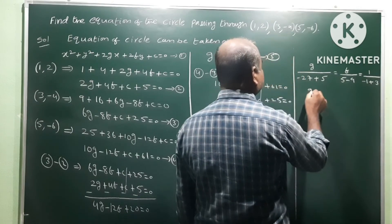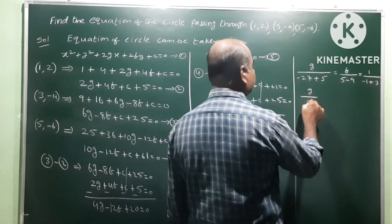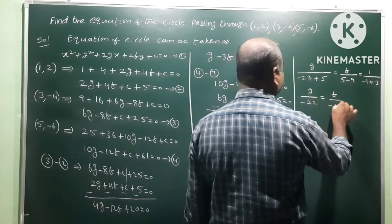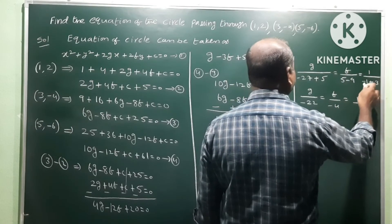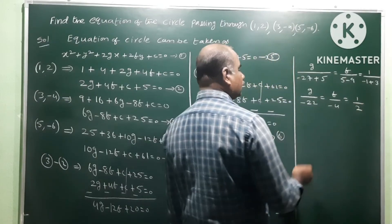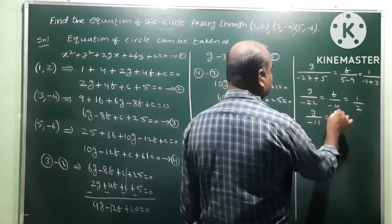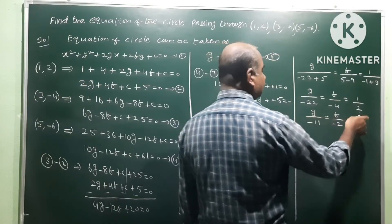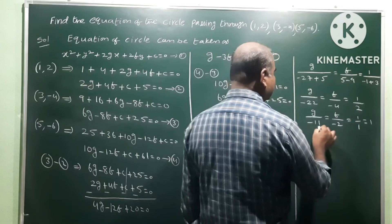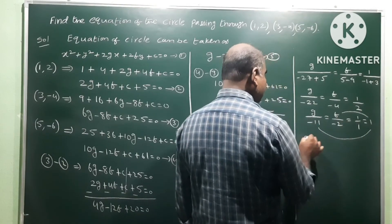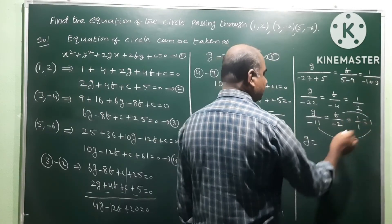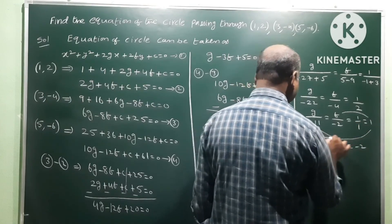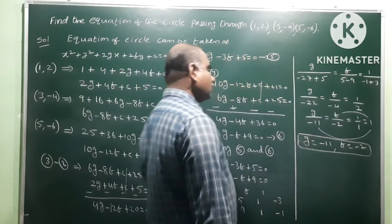Computing: g / [-27 + 5] = g / -22, f / [5 - 9] = f / -4, 1 / [-1 + 3] = 1 / 2. So g / -22 = f / -4 = 1 / 2. Dividing: g = -22 / 2 = -11, f = -4 / 2 = -2. Therefore g = -11 and f = -2.